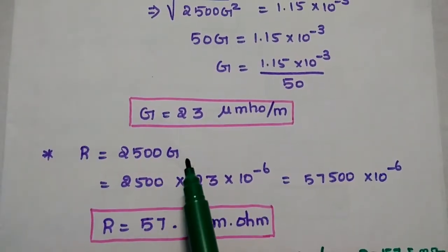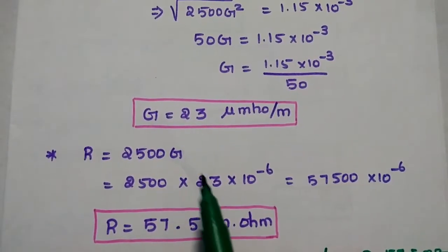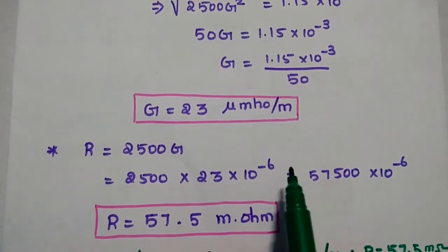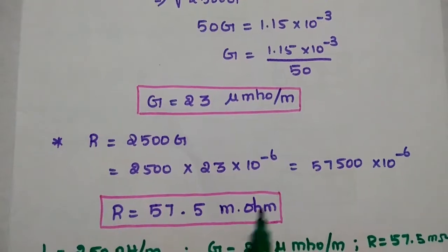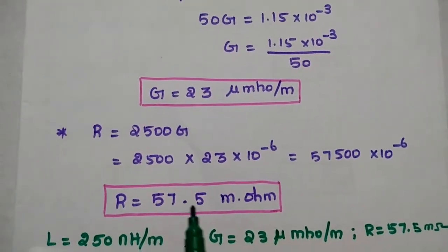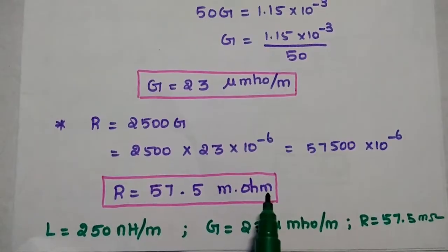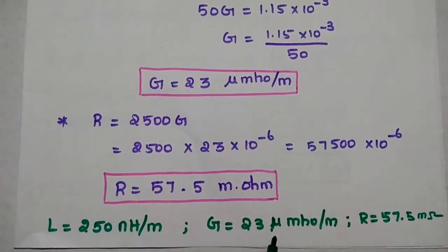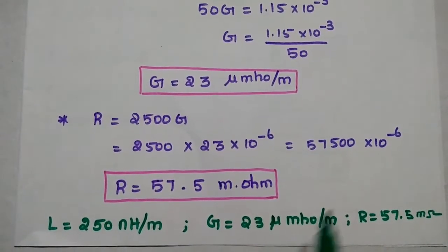R is equal to 2,500 G. Replacing G with 23 × 10⁻⁶, we get R equal to 57.5 milliohm per meter. So we have obtained all the primary constants of this distortionless line.